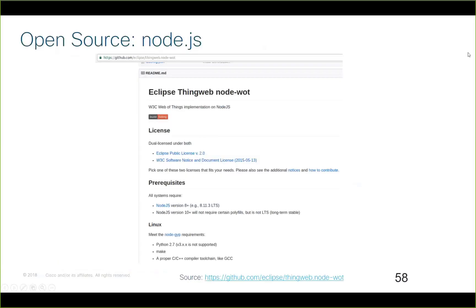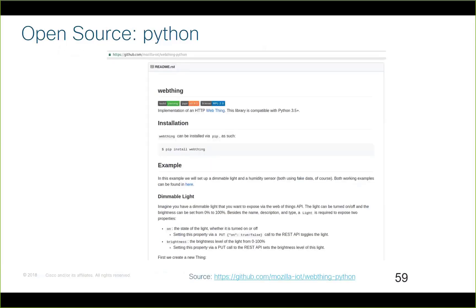Now we have two open sources. The first is the official Node.js implementation. It has examples and is updated very frequently — almost every day. It has simple examples to follow and understand how the thing description works. The second open source is in Python, from Mozilla. The Python implementation offers a web thing server: when you create your thing, you put it into their Python server, and you expose a thing to the internet through a REST API. Those are the two open source implementations presented today.